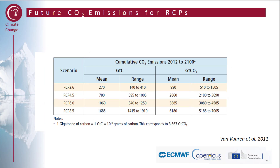This table shows the total CO2 emissions between 2012 and 2100 in both gigatons of carbon and gigatons of CO2. You can see there is a large difference in emissions between RCP 2.6 and RCP 8.5 — under RCP 8.5, we emit almost six times as much CO2 compared to RCP 2.6.